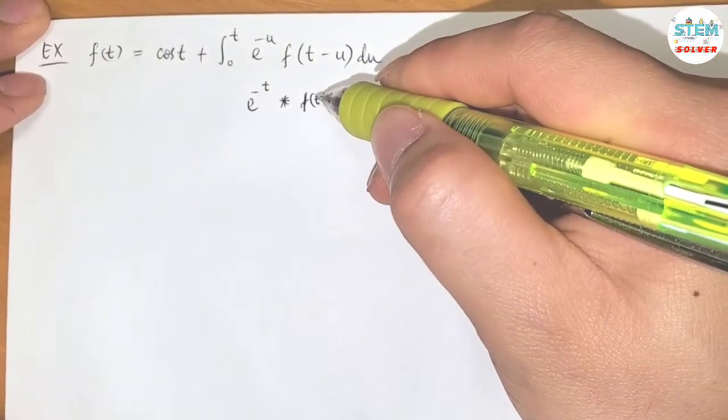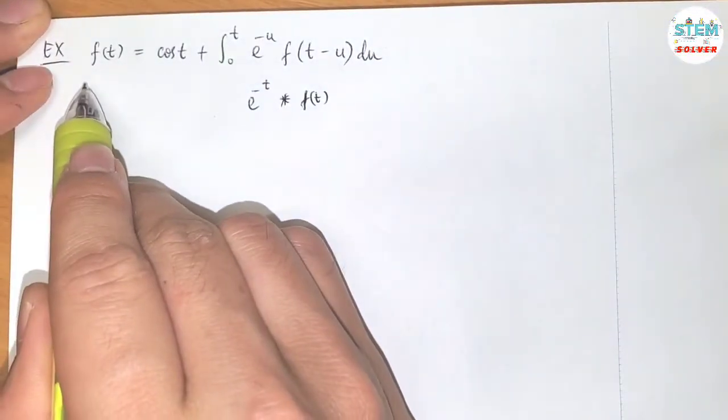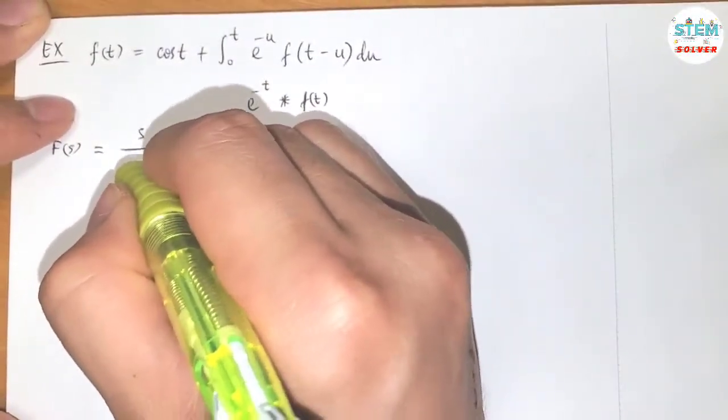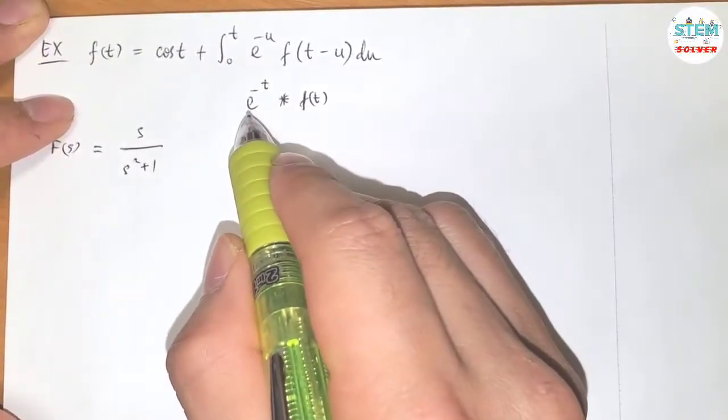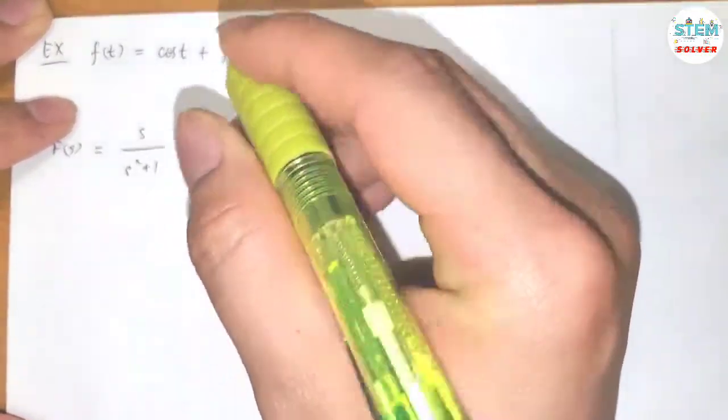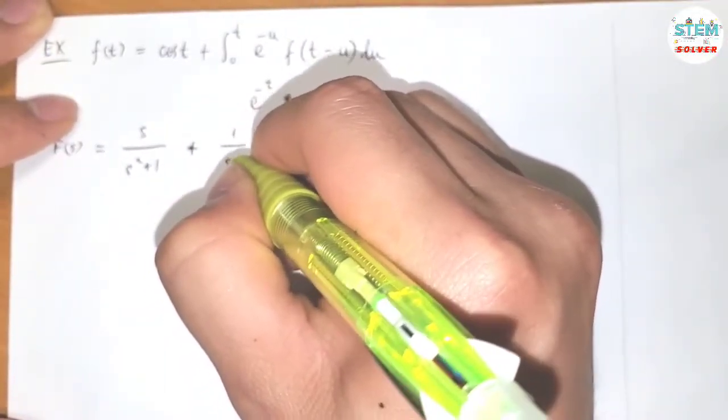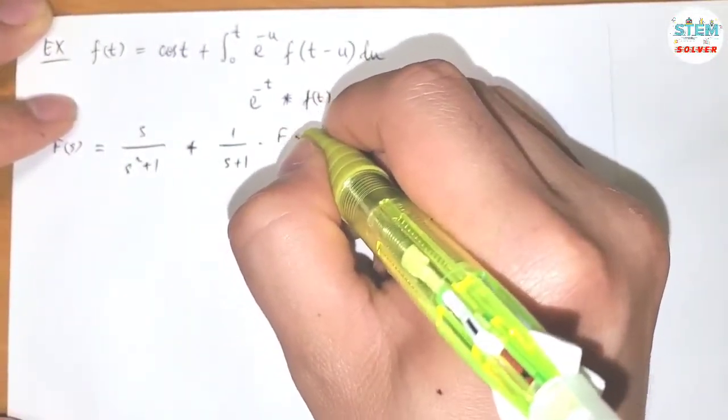At this point, what I'm going to do is apply the transform on both sides. So I have capital F of s equals s over s squared plus 1, and transform of this one is 1 over s plus 1 times capital F of s.